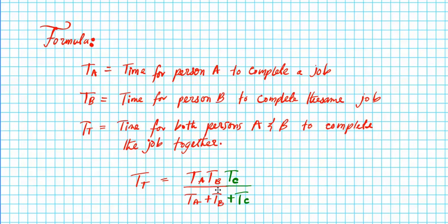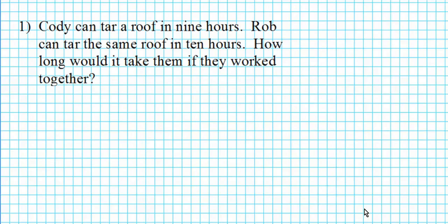Basically, we're working with the value of times for each individual person. This is the formula we're going to be using for our examples today. Let's go ahead and consider this example. Question number one: Cody can tar a roof in nine hours. Rob can tar the same roof in 10 hours. How long will it take them if they worked together?